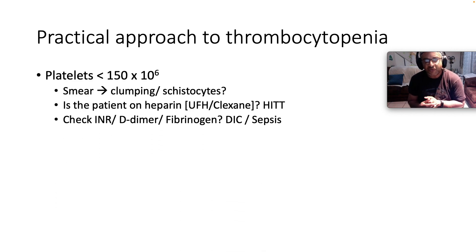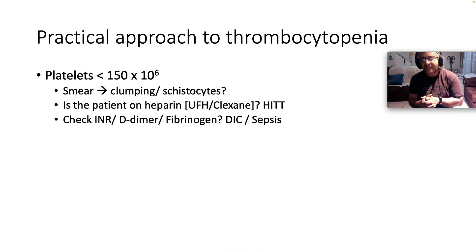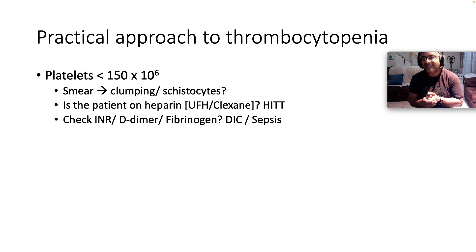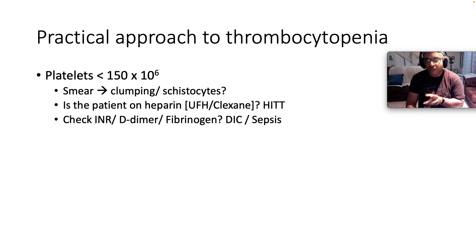Then, the next part is to check your INR, your D-dimer, and your fibrinogen. If your INR is up, and your D-dimer is up, and your fibrinogen is low because it's being consumed, think: is this disseminated intravascular coagulation, usually on the back of sepsis?